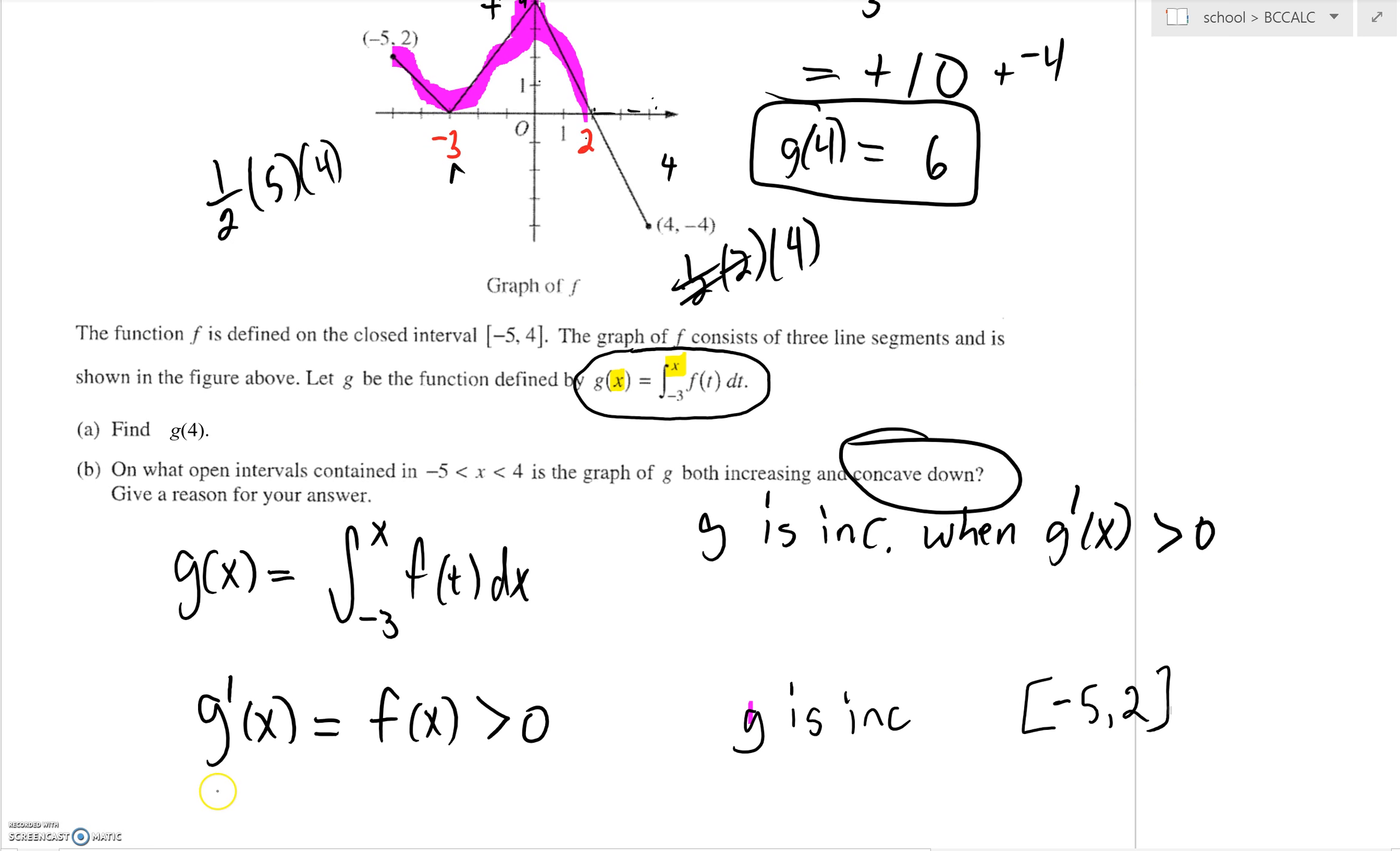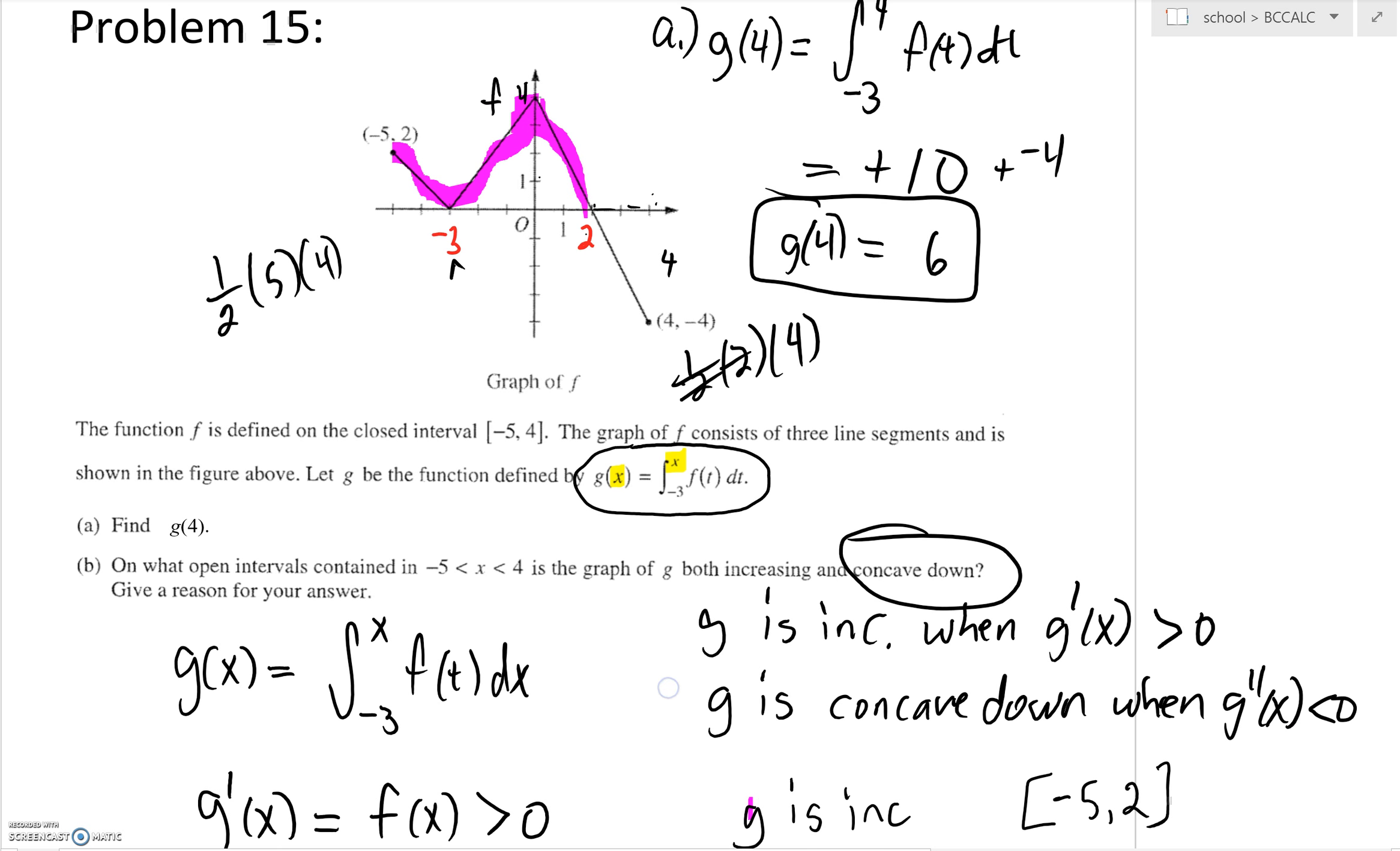You're concave down when your second derivative g double prime of x, which is f prime of x, is negative. So g is concave down when g double prime is less than zero. I'm interested where f prime is less than zero. F prime would be the tangent line slopes. I'm interested where f is above the x-axis but I want f prime to have negative tangent line slopes. That's going to be here and here.